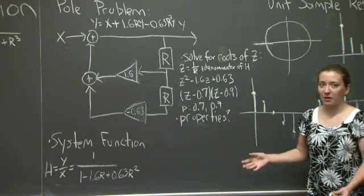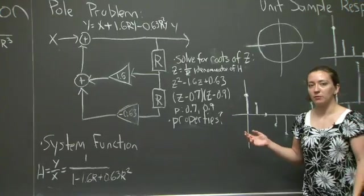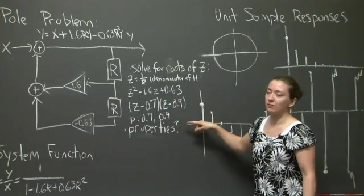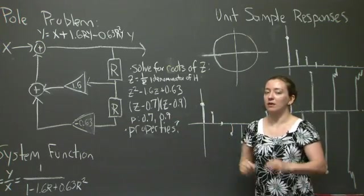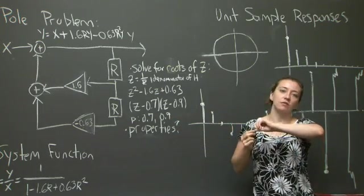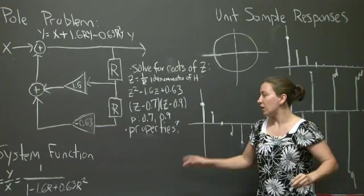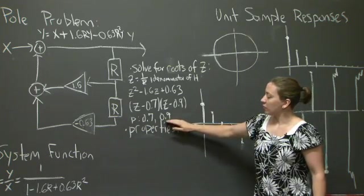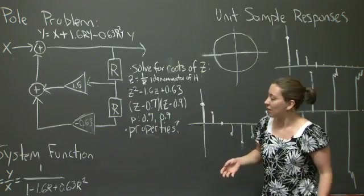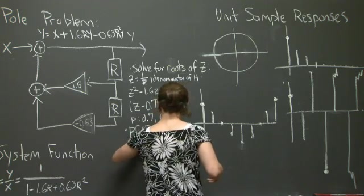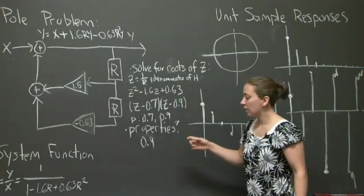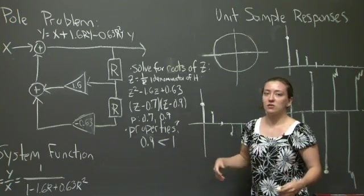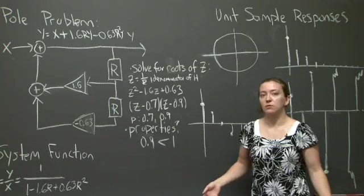Based on my poles, what are the properties of the unit sample response in the long term? The first thing I'm going to do is look for the dominant pole among the poles that I found. In this case, I don't even have to worry about finding the length of the distance from the origin for poles in the complex plane. All I have to worry about is the magnitude of poles on the real axis. 0.9 is my dominant pole because it's the largest pole. 0.9 is less than 1, so I'm going to end up with convergence. Eventually, my system is going to converge, or tend towards zero.